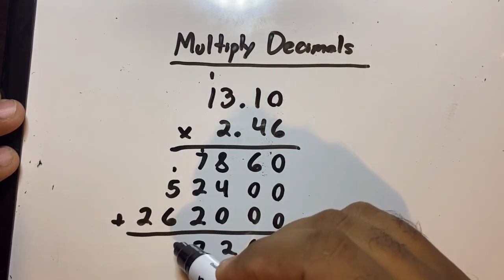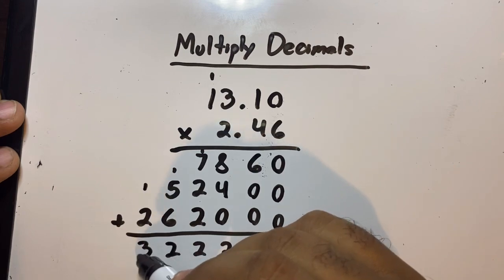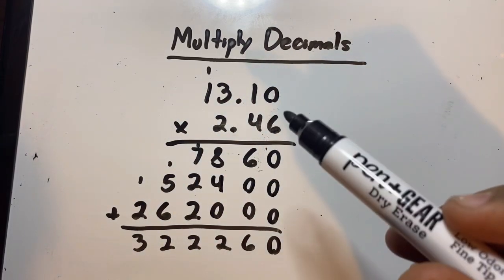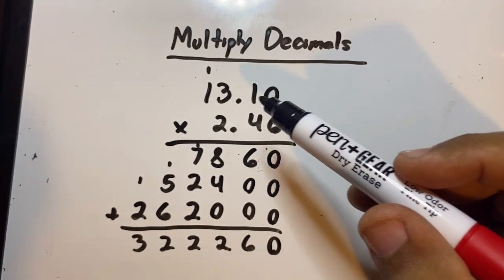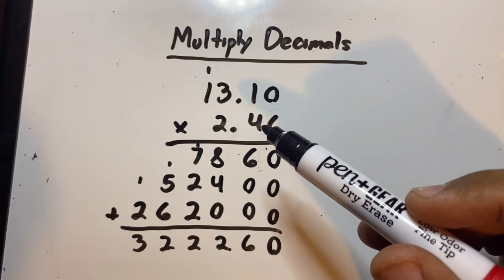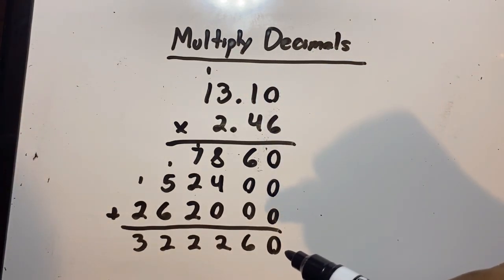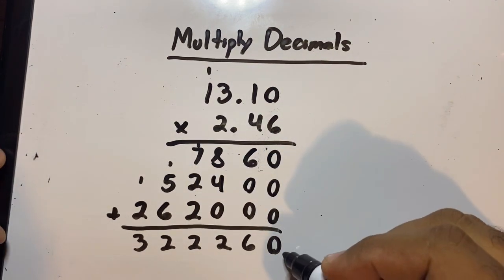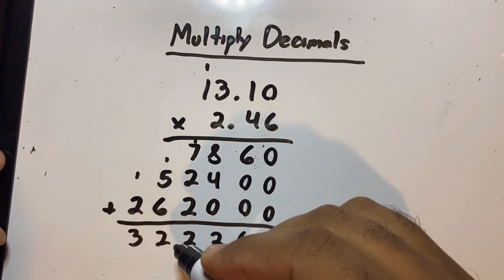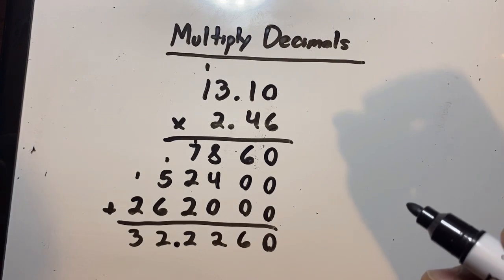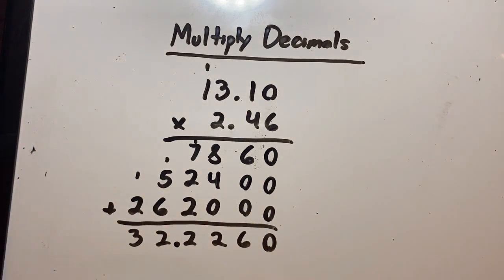Five plus six is eleven, plus the one is twelve — carry the one again. One plus two is three. Now we count the decimals: there are two decimal places here and two decimal places here, making four in total. Starting from the end of the answer, count four to the left — one, two, three, four. My answer is 32.2260.